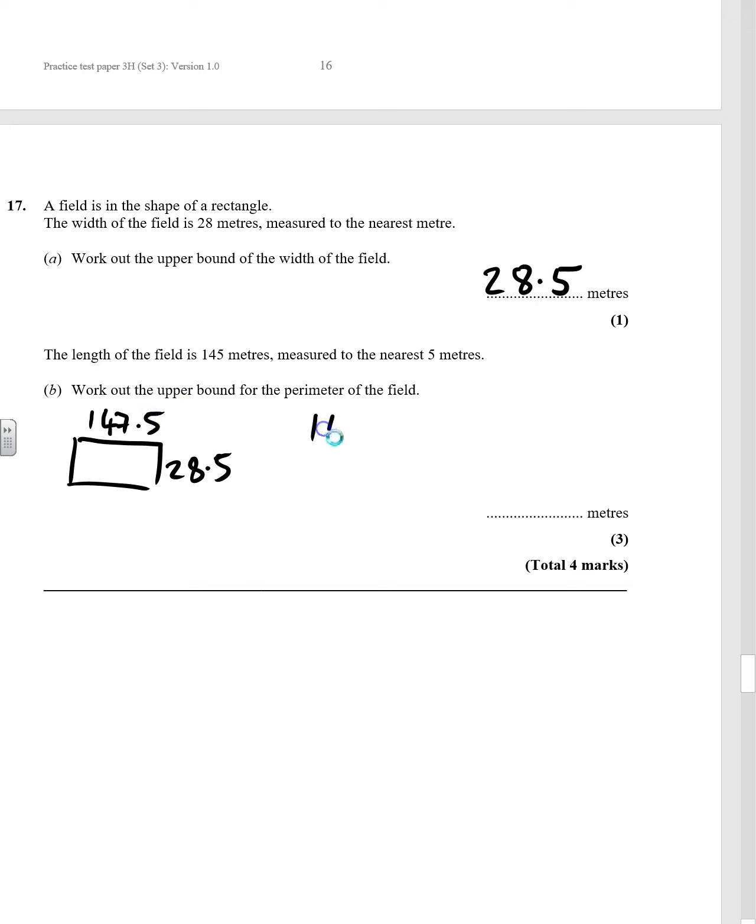So the perimeter, 147.5 times 2, because we've got the two sides, and then we need to add the widths, 28.5 times 2. Tap that into your calculator, you get 352 metres.